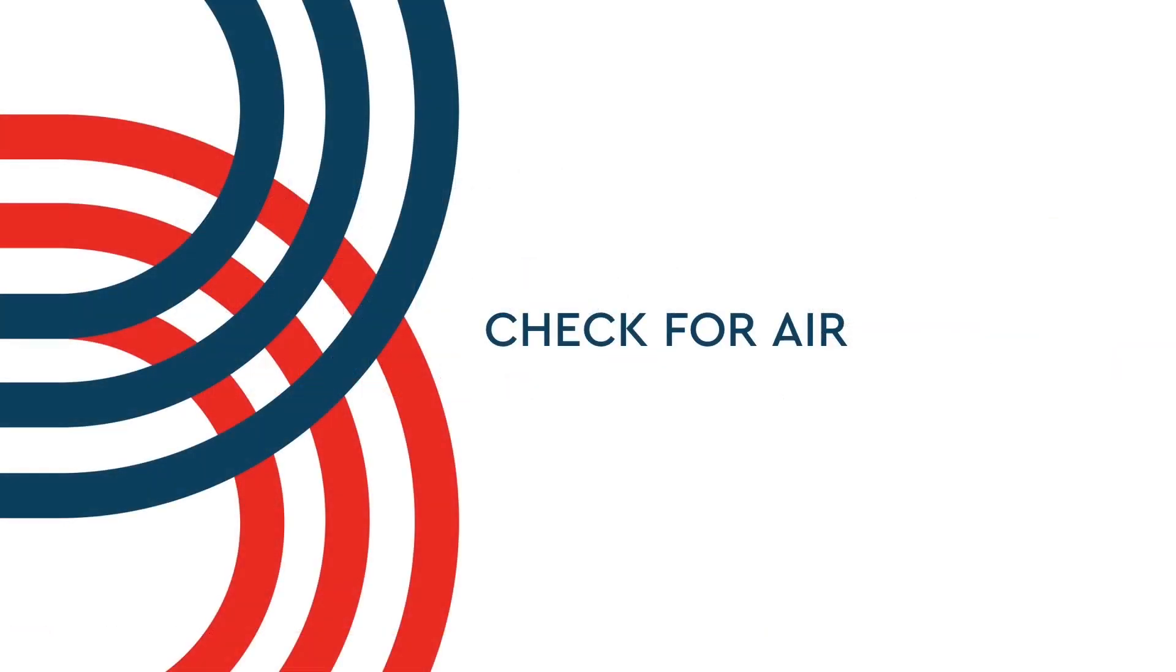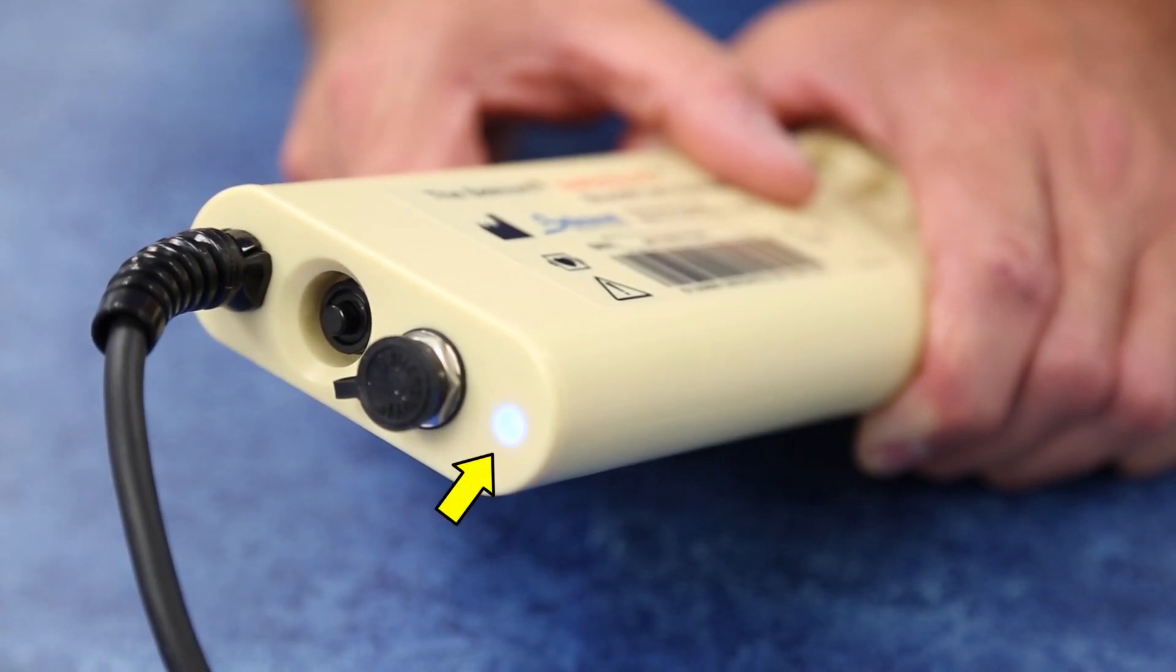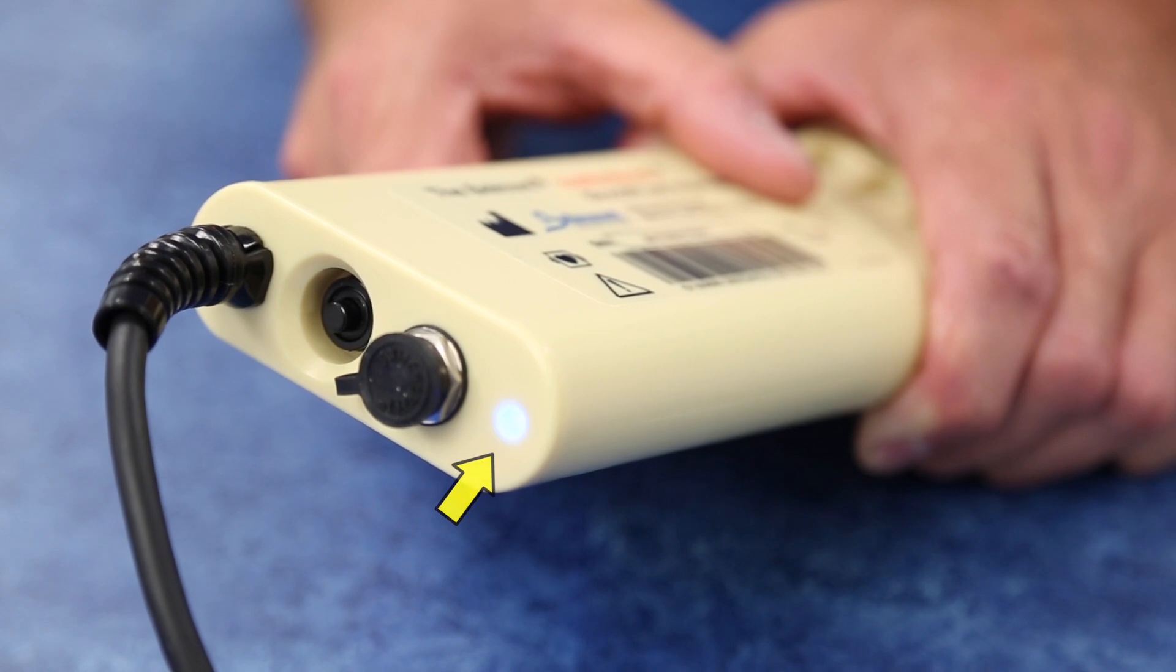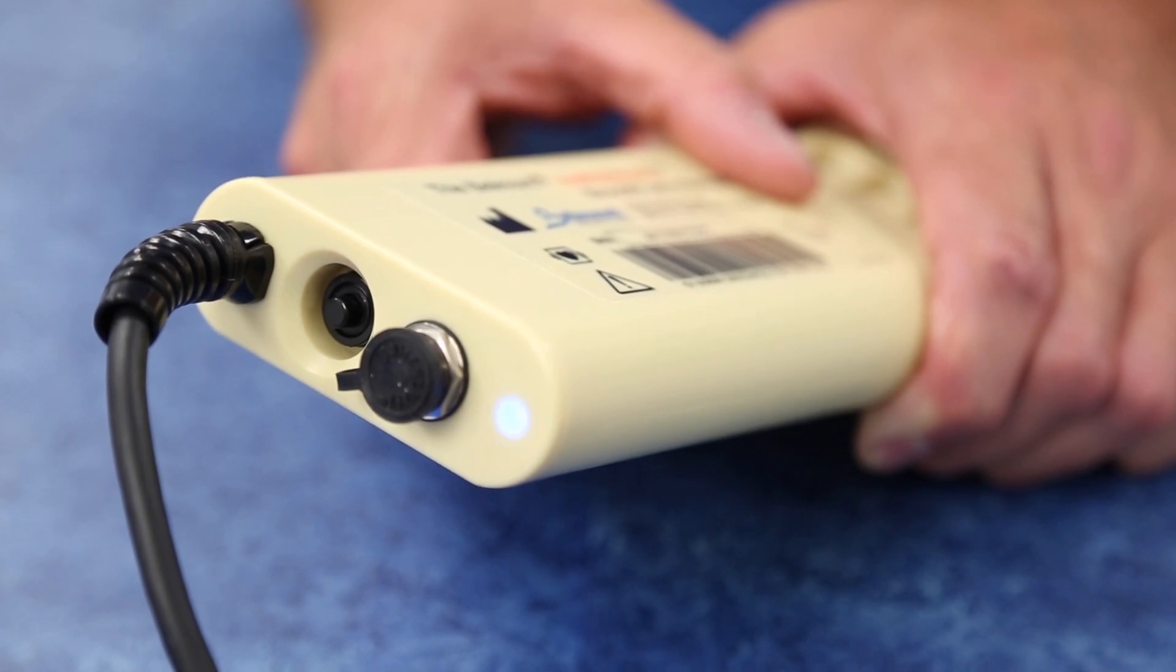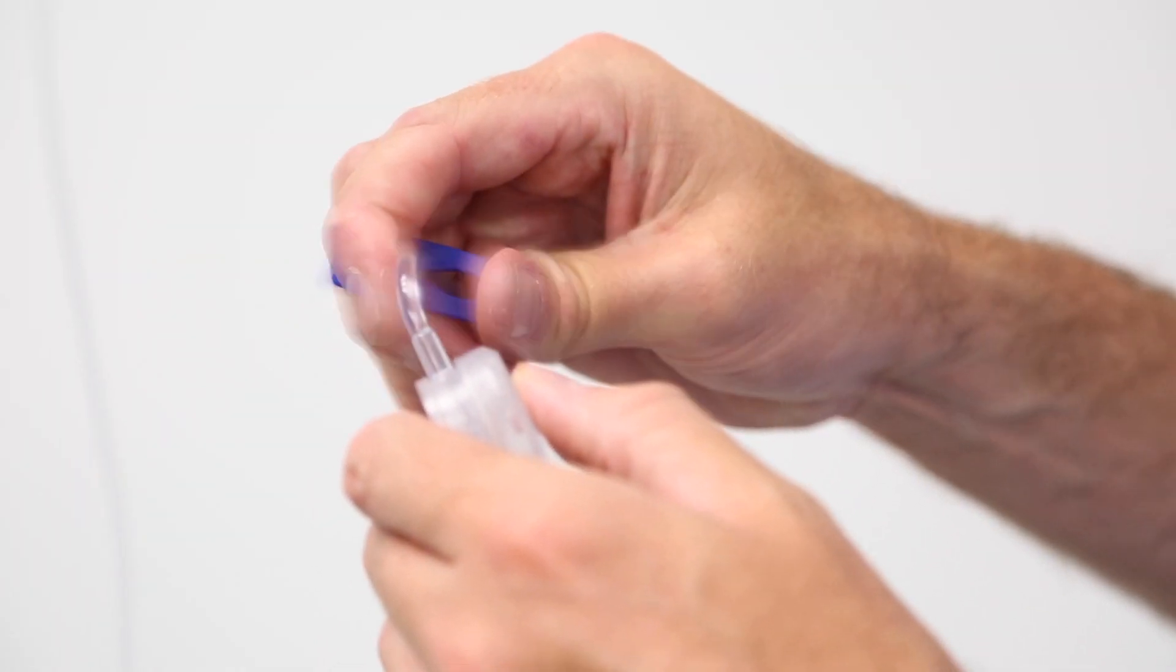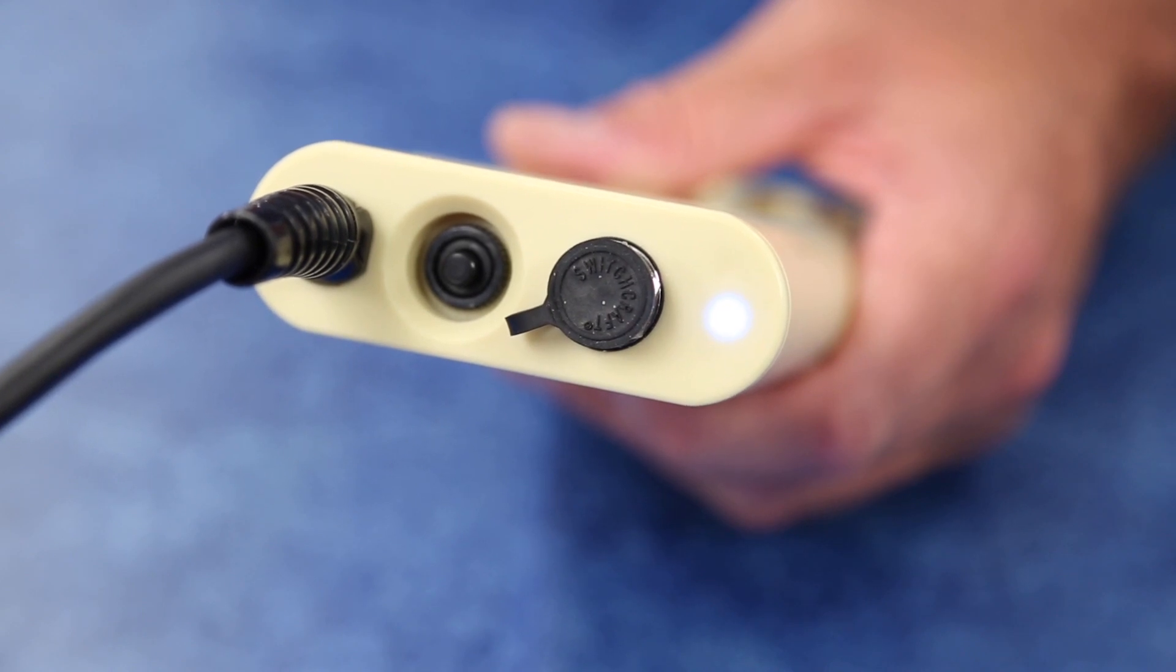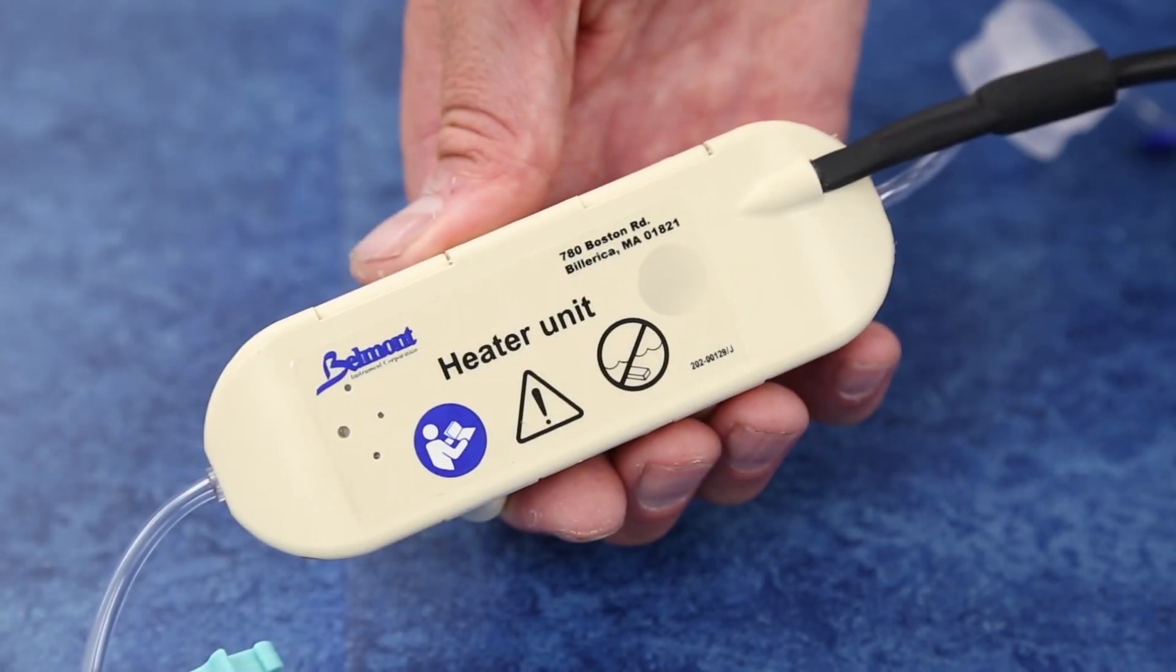If the system detects an empty set or air within the fluid path, blue and red LEDs will flash and an audible alarm will trigger. The heater will continue to function normally. Check to be sure fluid bags are not empty and that lines are not clamped off. The system automatically resets and continues normal operation when air is cleared from the disposable.